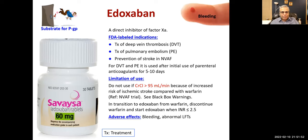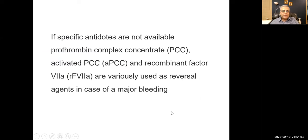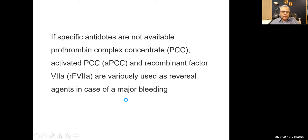Adverse effects of edoxaban: bleeding and abnormal liver function tests. If specific antidotes are not available, prothrombin complex concentrate, activated prothrombin complex, or recombinant factor VIIa can be used as reversal agents in case of major bleeding. We stop here and tomorrow we will start with warfarin.